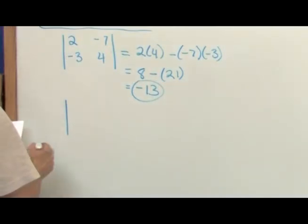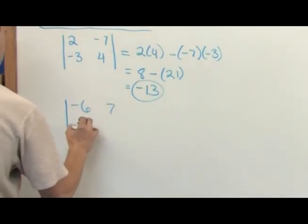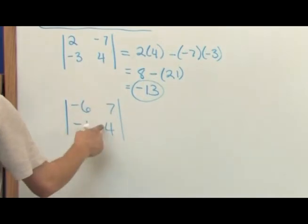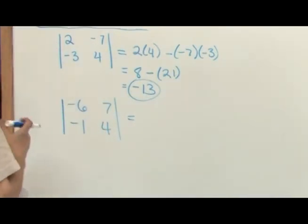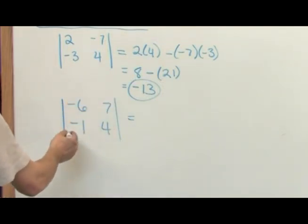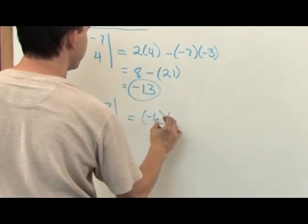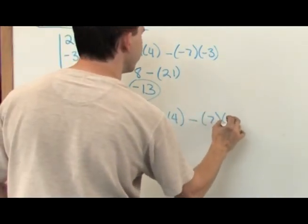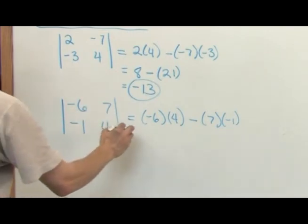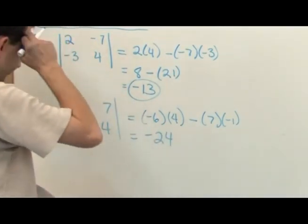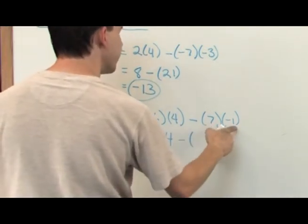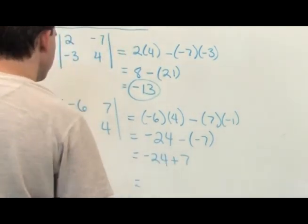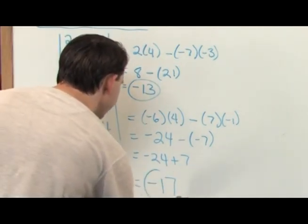For the next one, let's find the determinant of the matrix negative 6, 7, negative 1, and 4. We're just going to visualize an X — going this direction, then going this direction. Negative 6 times positive 4, minus, going this direction, 7 times negative 1. Negative 6 times 4 is negative 24, minus 7 times negative 1 which is negative 7, so you get negative 24 plus 7, which is negative 17. That is the determinant.